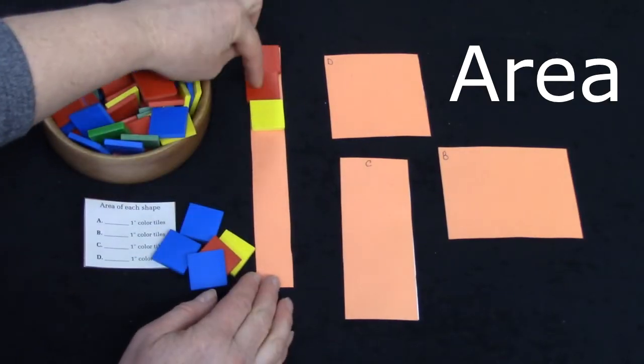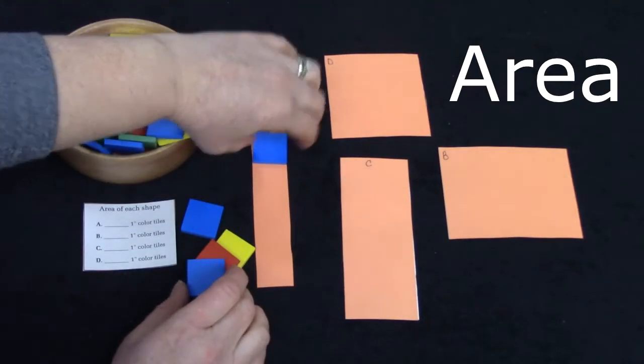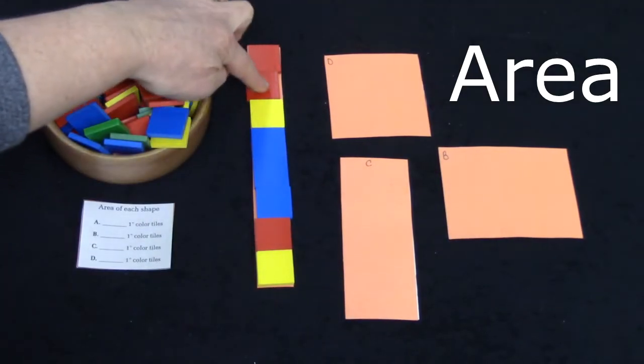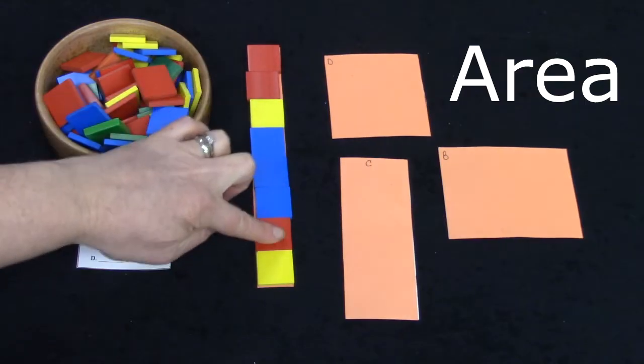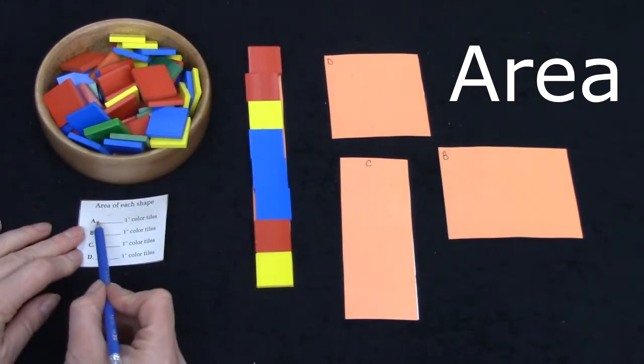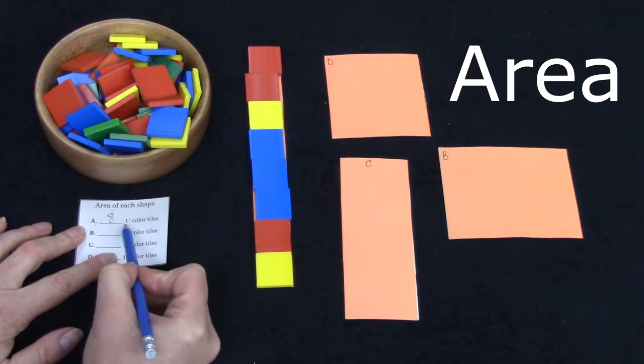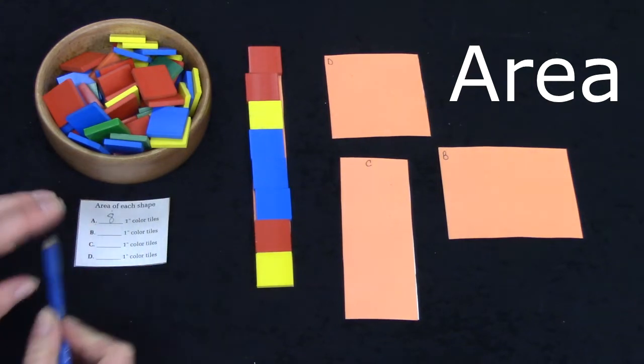So far it has been three one inch squares. Let's count how many. One, two, three, four, five, six, seven, eight. On my chart for shape A I'm going to say that it was eight one inch color tiles.